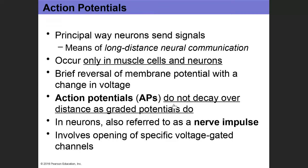If the signals are strong enough — meaning there are a lot of graded potentials that summate or add up at the soma — then that will cause an action potential to develop at the axon hillock. Once that action potential is developed there, it will continue to go down the entire length of the axon and does not stop. So action potentials are actually preceded by graded potentials adding up from dendrite to soma, and that leads to the action potential.